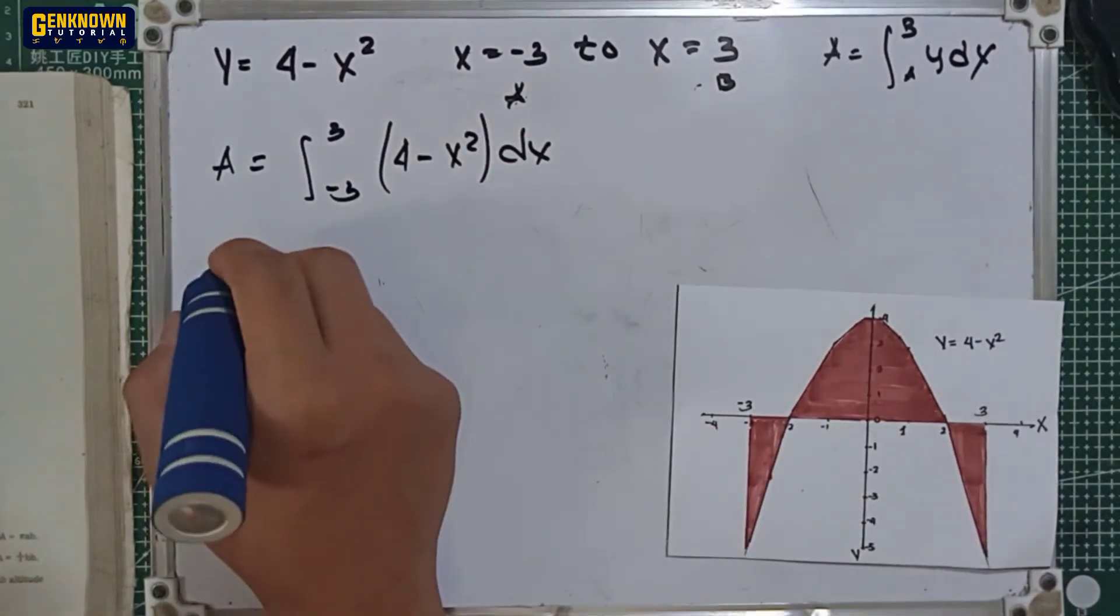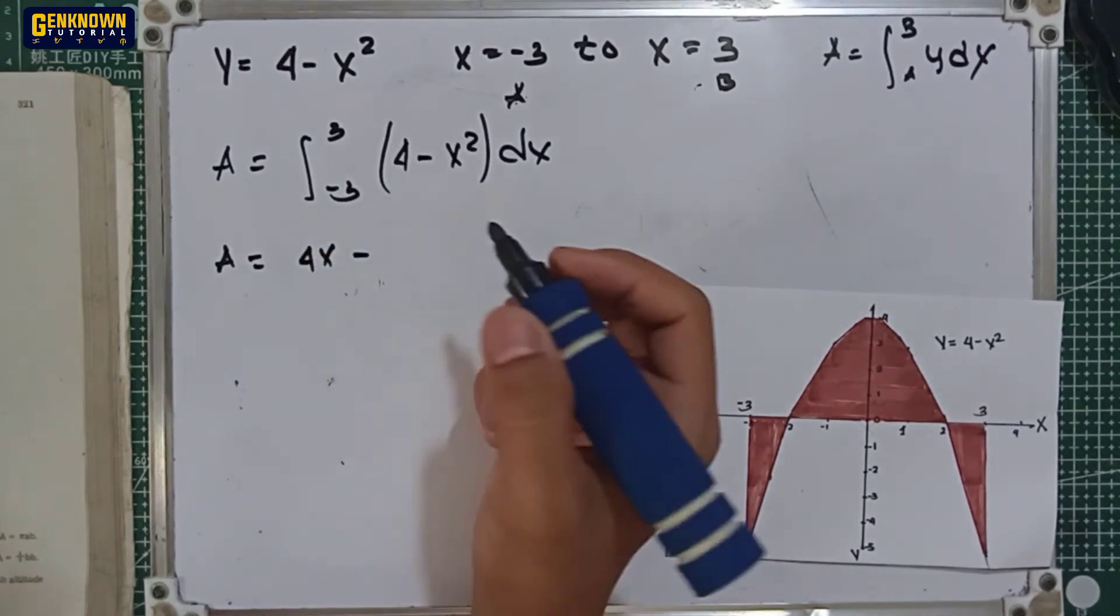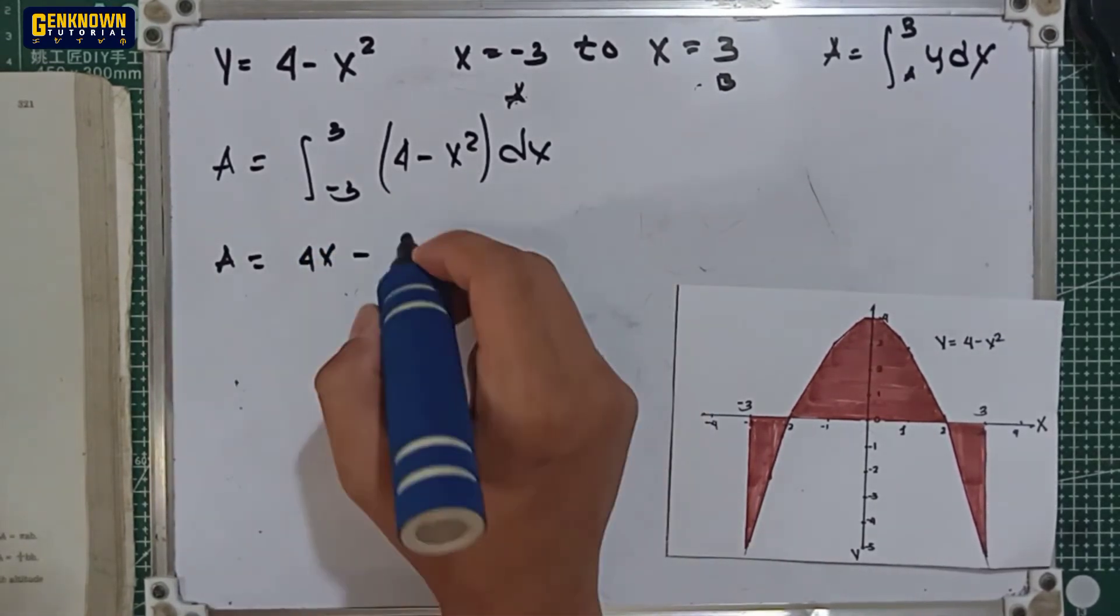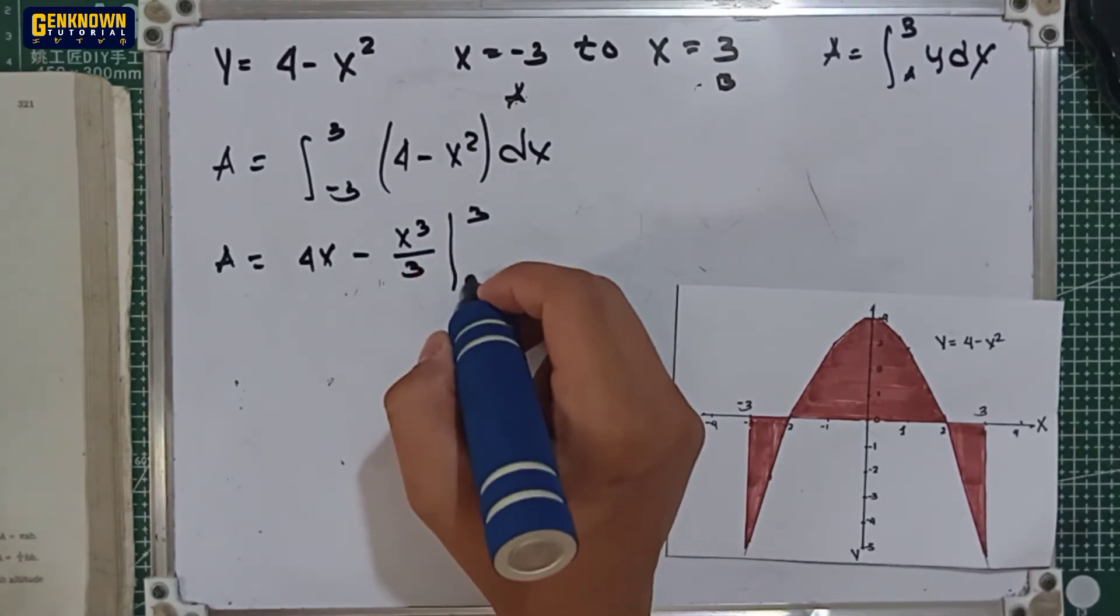Basic integration lang ulit. So area is equal to, integral of 4 dx is equal to 4x minus the integral of x squared dx is equal to x cubed over 3, with the upper limit 3 and lower limit negative 3.